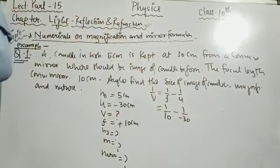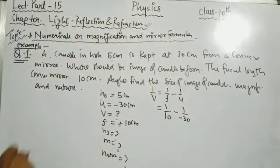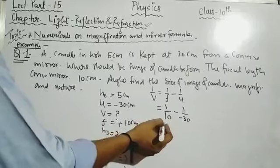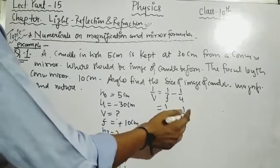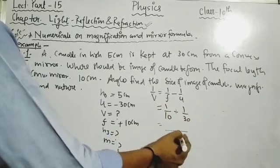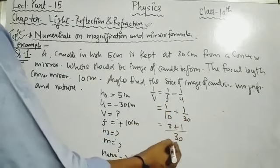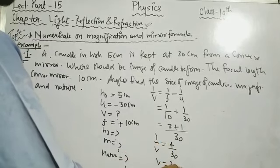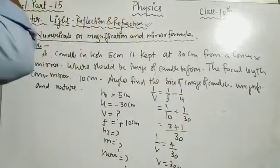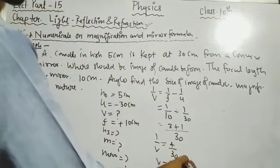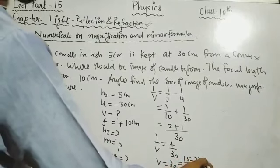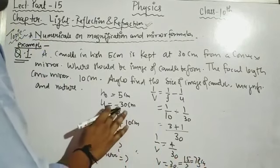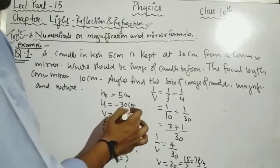Please pause the video and try to solve this question yourself before watching the solution. Taking LCM of 30: 1/v = 3/30 + 1/30 = 4/30. So v = 30/4 = 15/2 = 7.5 cm. The value of v = 7.5 cm, which is positive, meaning the image is virtual.